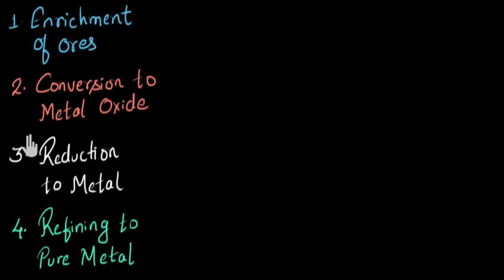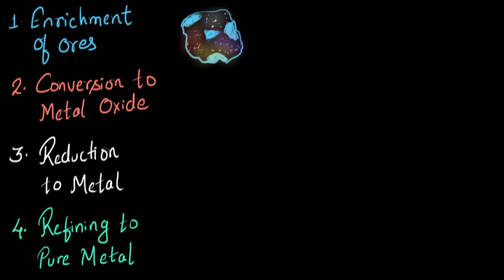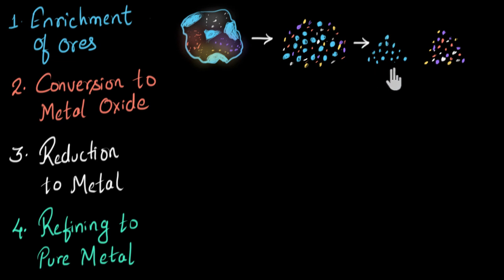So these are the steps. First, enrichment of the ores. So over here, we take the ore, which is basically a rock and we crush it to pieces. And then we separate the metal compound in these pieces from the impurities. So over here, we have concentrated the metal compounds in one bunch. Therefore, we have enriched our ores.